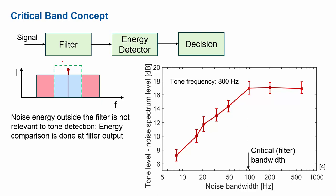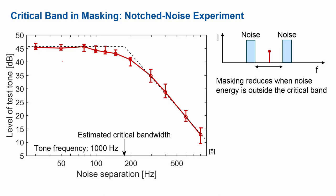There are other experiments that are more widely used to estimate the critical bandwidth. The most widely used one is the notched noise experiment. We turn the energy detection around: we have a tone at a fixed level and fixed frequency, and we have two flanking noises.